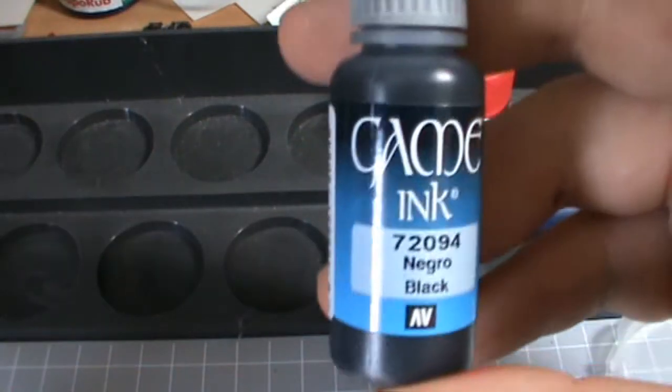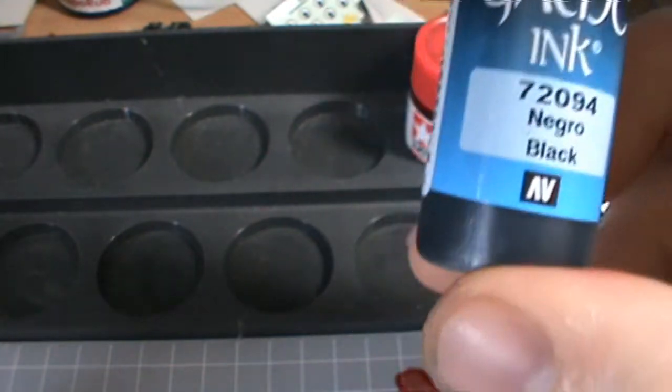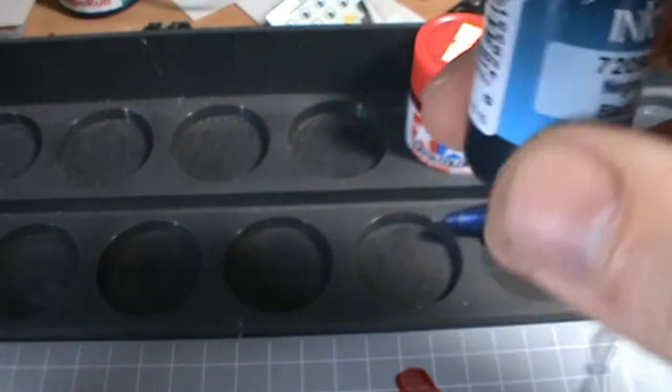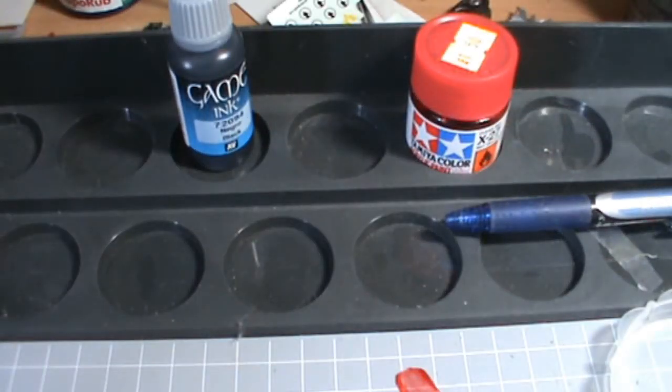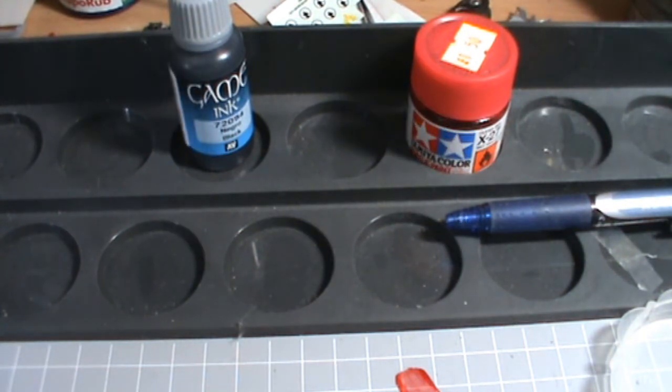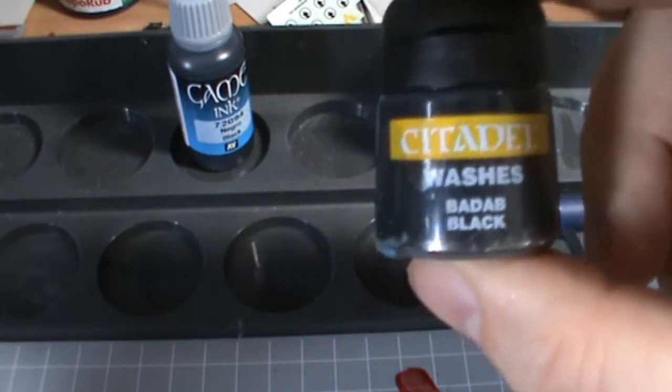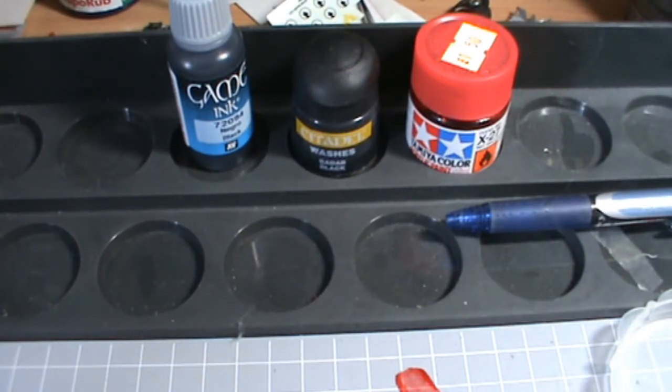So what you're going to need to do is I'm using Vallejo Game Color inks, and we're using a black ink. Now I haven't really tried this with Citadel's Badab Black, and to be honest I don't think a wash would have the pigment to do it. But I guess what, we're going to give it a go. So you also might need some Badab Black, but for the techniques, for the examples I'm going to show you, I have used the Vallejo Game Color.